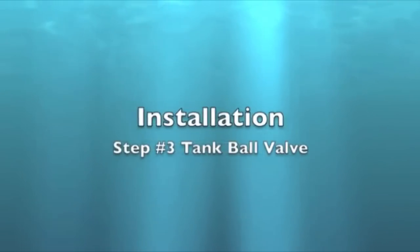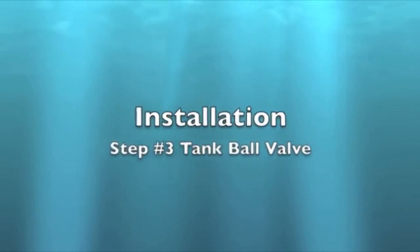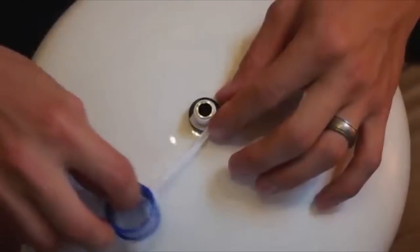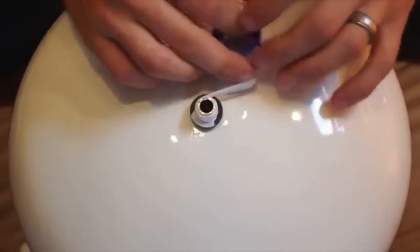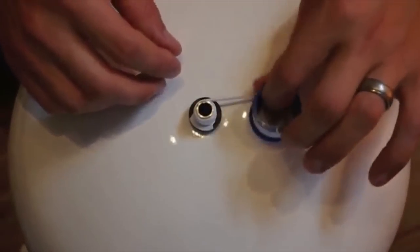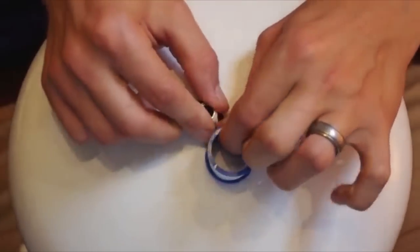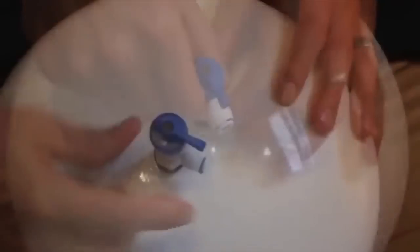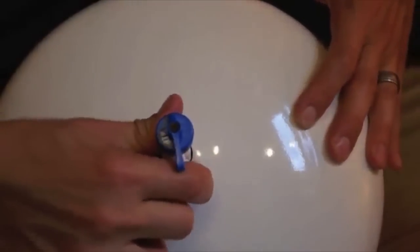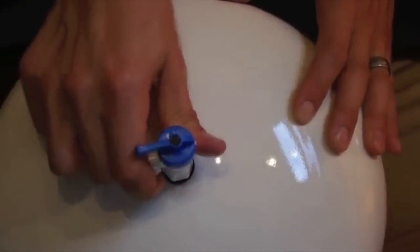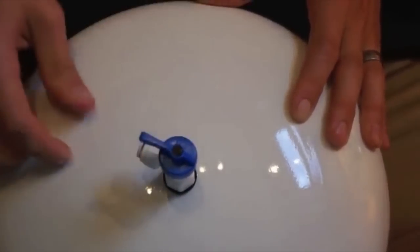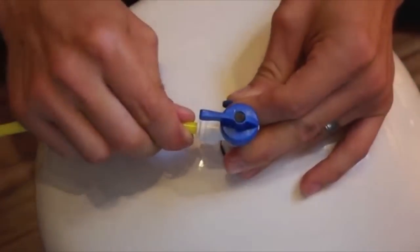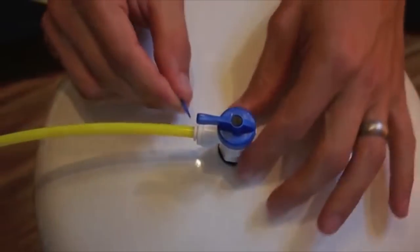Install the shut-off valve. Put about six turns of Teflon tape onto the tank fitting. Install the shut-off valve and tighten by hand. Insert the yellow tubing into the tank shut-off valve.